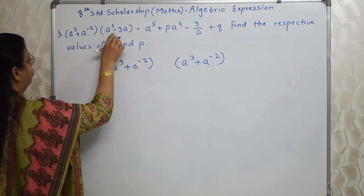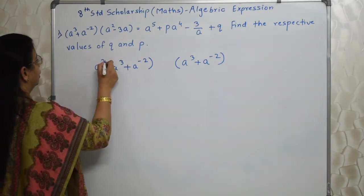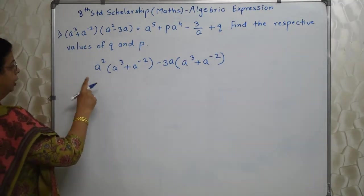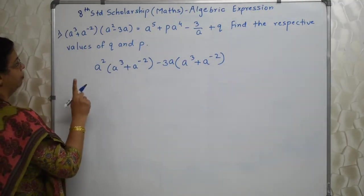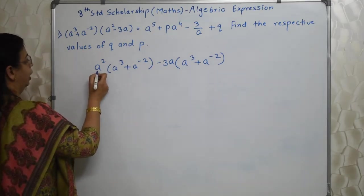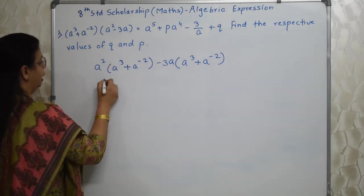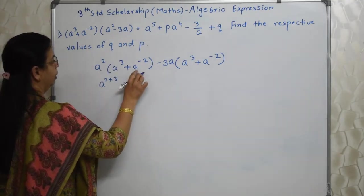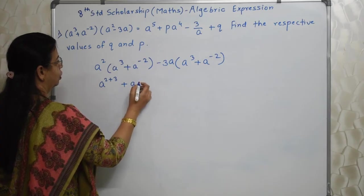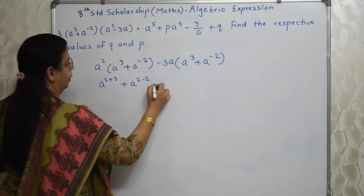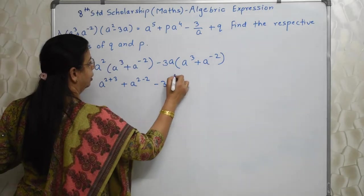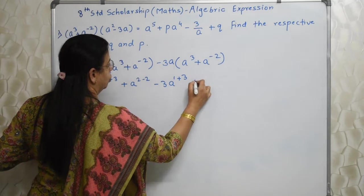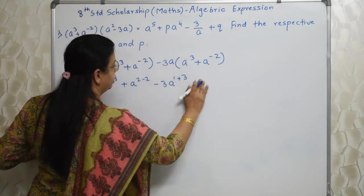And give one term to each bracket and then start multiplying. Here the rules of indices are very useful. A square into A cube is A to the 2 plus 3, A to the 5. A square into A raise to minus 2, that is 2 minus 2. Here again same way. Here A raise to 1 it is, so 1 plus this 3. So plus, minus, minus, minus will come here.